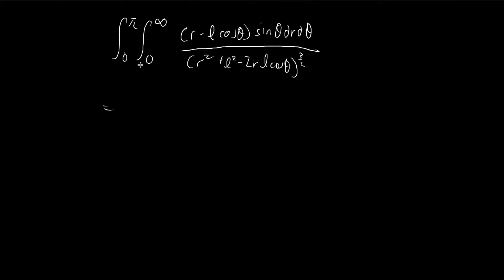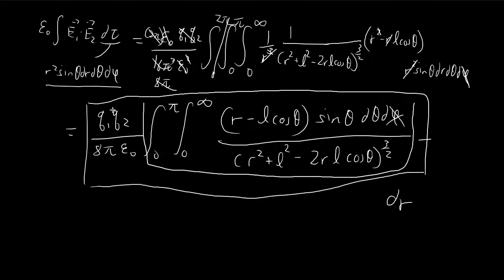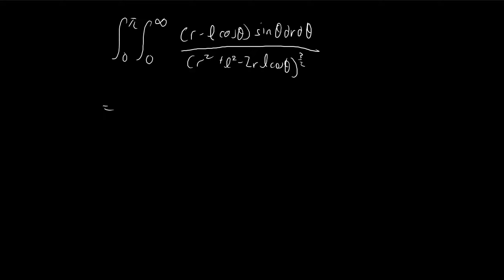So now I'm just going to evaluate this integral. I'm going to ignore these constants for the time being. The first thing we're going to do is substitution. We're going to let u equal r squared plus l squared minus 2rl cosine theta. And then essentially we're just going to treat this as a usual single variable integral, treat theta as a constant, and then just do regular substitution.